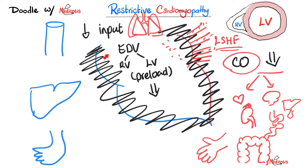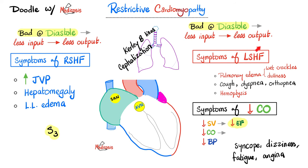Because the heart has fibrosis, there is sudden volume overload, which can lead to an S3 heart sound. Less input equals less output, and I suffer from symptoms of congestive heart failure.